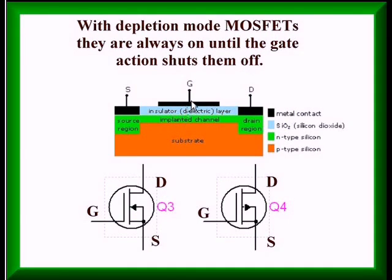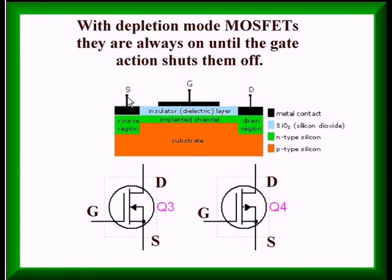Notice also that the gate terminal has an insulated layer of silicon dioxide between it and the N material connected to the source, forming a weak capacitor. This is why you have to connect a gate discharge resistor — usually a high value of 10K or 20K — between source and gate. If you don't, when you turn it off you may not be able to turn it back on unless you discharge that electric charge.